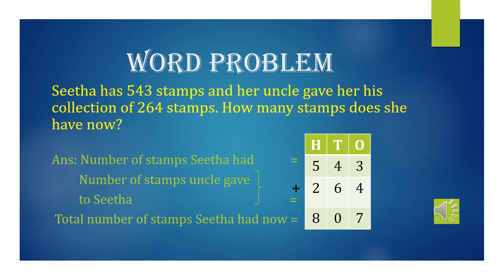Word problem: Sita has 543 stamps and her uncle gave her his collection of 264 stamps. How many stamps does she have now? The number of stamps Sita had is 543, and the number of stamps her uncle gave her is 264. When we add both, we get the total: 543 plus 264 equals 807 stamps.